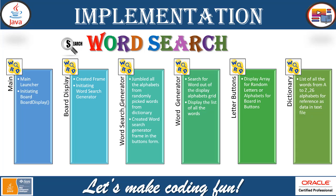First we need to come up with the backend programming where we are going to create a kind of a visual grid, or an array of letters or alphabets. Once this is done, we are going to create the word search generator frame in buttons form. So all 26 alphabets in a random or shuffled form as buttons will be created in the word search generator.